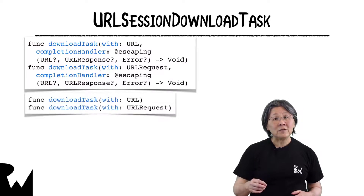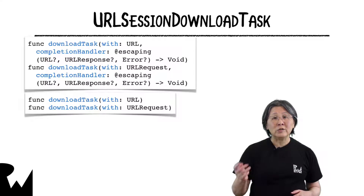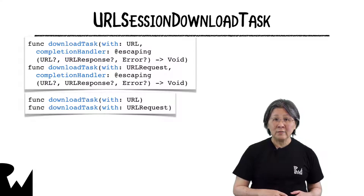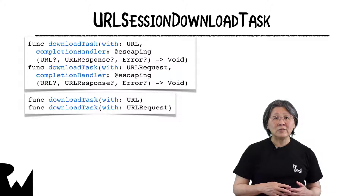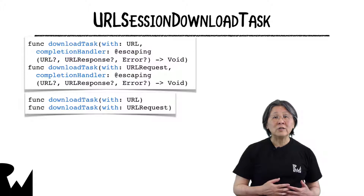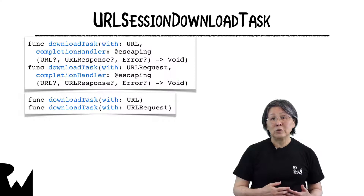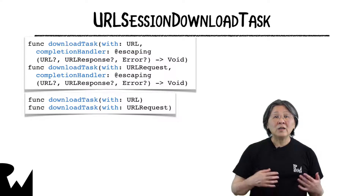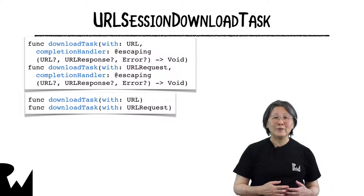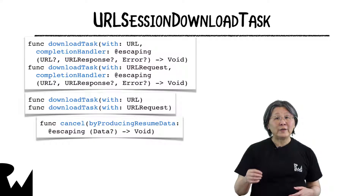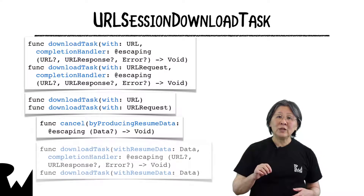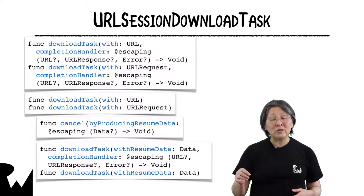The custom delegate version of Download Task with URL or Request is for more complex transfers where you need to monitor progress or handle intermediate response data. The session must have a custom delegate that implements the relevant delegate methods. We'll learn how to use custom delegates in the next part of this course. Download Task has a cool feature: if it's cancelled or fails before completing the download, you can save Resume Data and resume the download later.